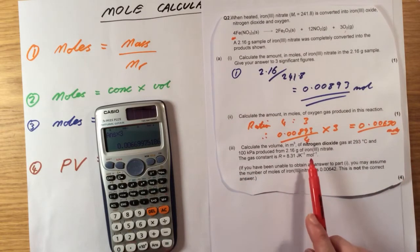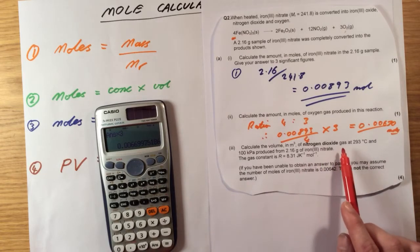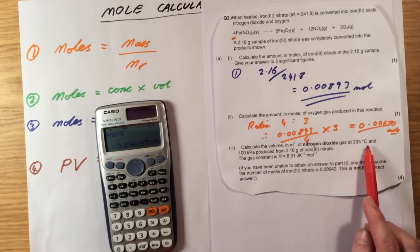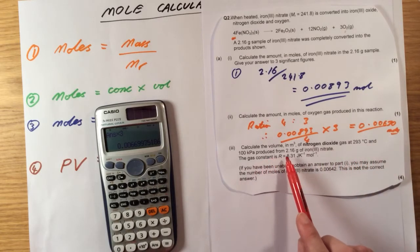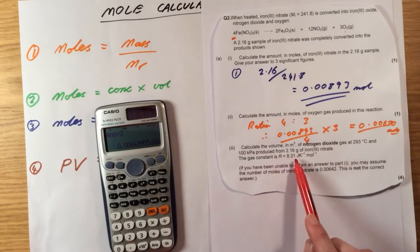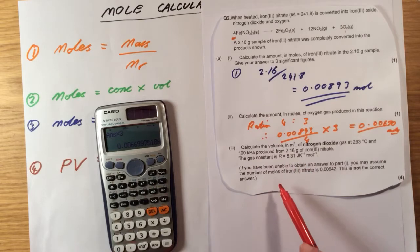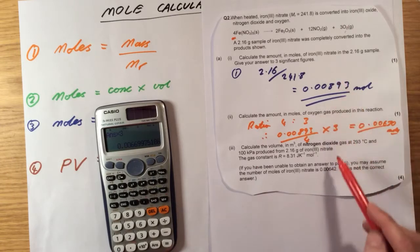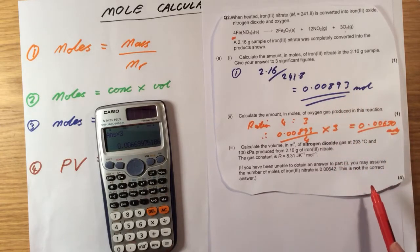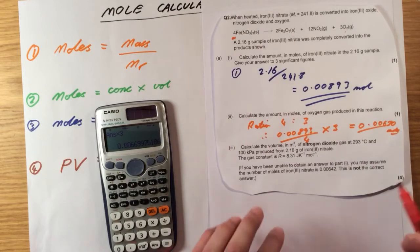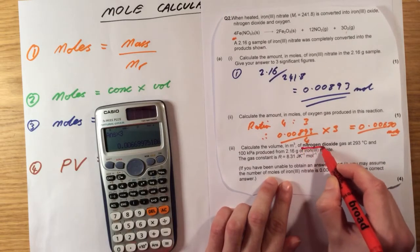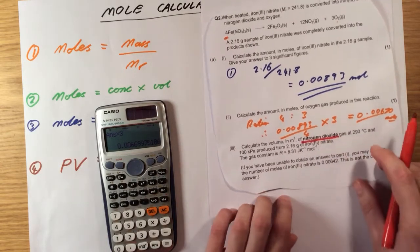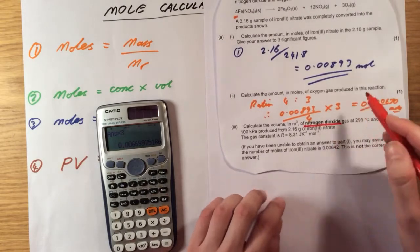Next question then, calculate the volume of nitrogen dioxide gas at 293 degrees C and 100 kilopascals produced from 2.16 grams of iron nitrate. It gives me what the gas constant R is. If you've been unable to obtain an answer for part 1, you may assume that the moles of iron nitrate is 0.00642. It's not too different from what we've got, so that would make me quite confident that that is right. This is not the correct answer. It's really nicely highlighted for us, we want nitrogen dioxide this time.